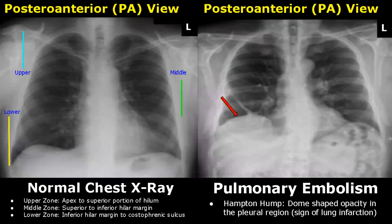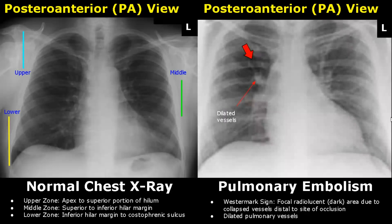Hampton Hump is the next sign — it consists of a dome-shaped opacity in the pleural region and it indicates lung infarction. In the Westermark sign, we will see a focal radiolucent area due to collapsed vessels distal to the site of occlusion. Along with this radiolucency, we will see dilated bright pulmonary vessels as well.